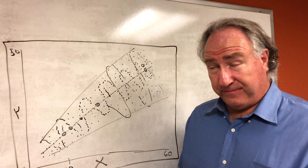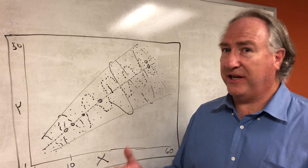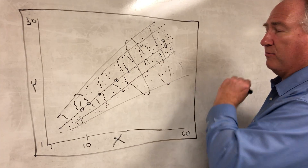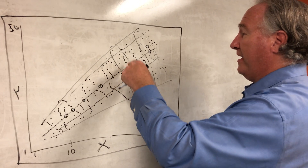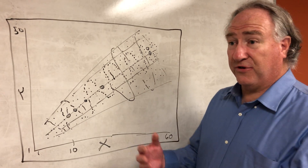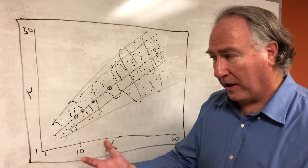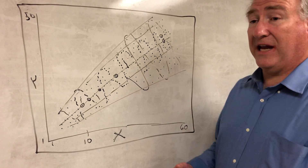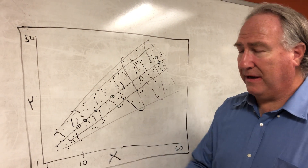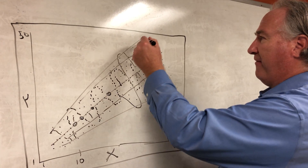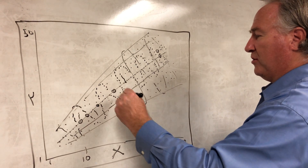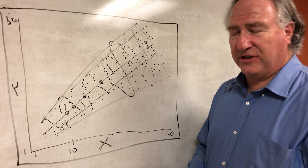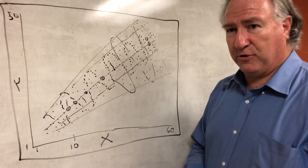Now we say we have heteroscedasticity in the data and we do not meet the homoscedasticity assumption. What you want to see is variability around the regression line that is about the same along the entire regression line — that's homoscedasticity. You don't want to see something that fans out, where variance around the regression line becomes greater and greater — that's heteroscedasticity.